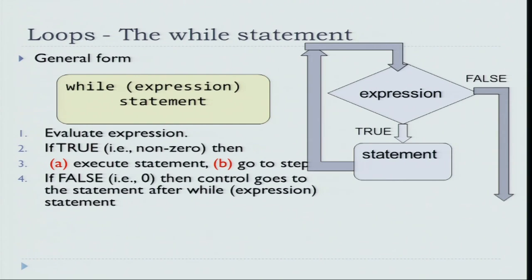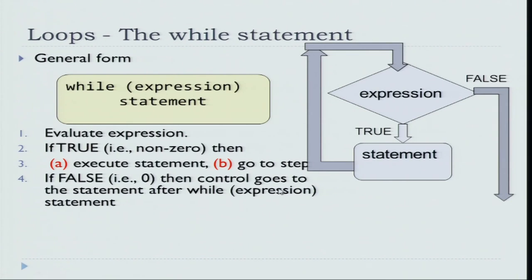The flowchart corresponding to the while expression will be: you test whether the expression is true or false. If it is true, you do the statement. If it is false, you exit out of the loop and execute the next statement outside the loop. If the expression is true in C — that is, the expression is non-zero — then execute the statement and go back to the expression. If it is false, then directly go to the next statement after the while loop.